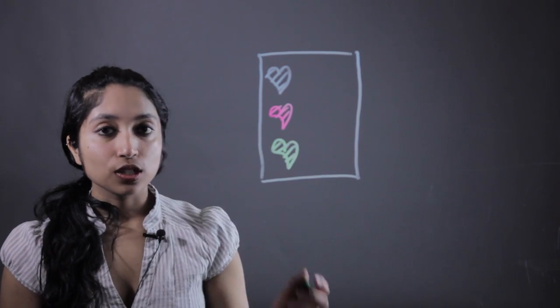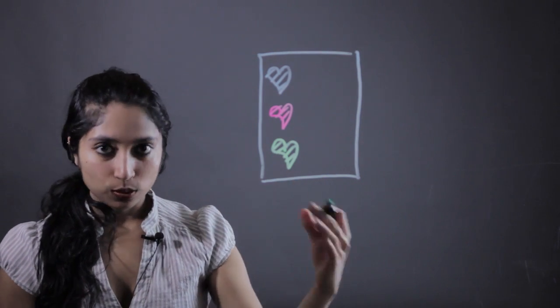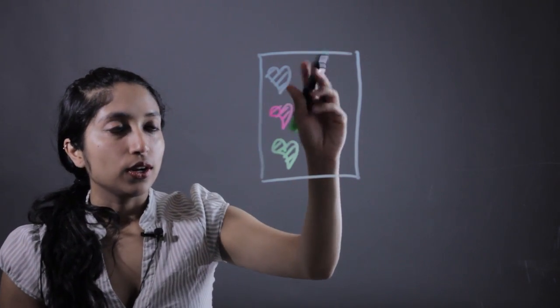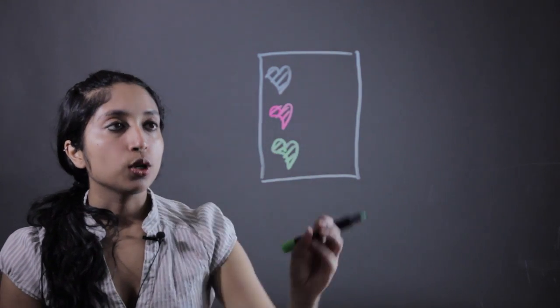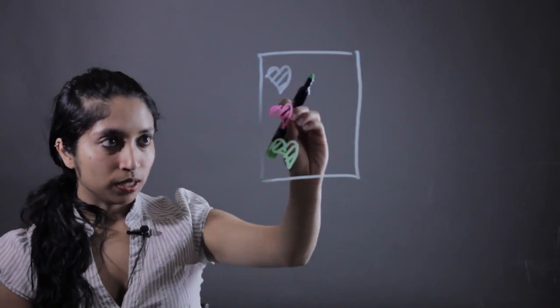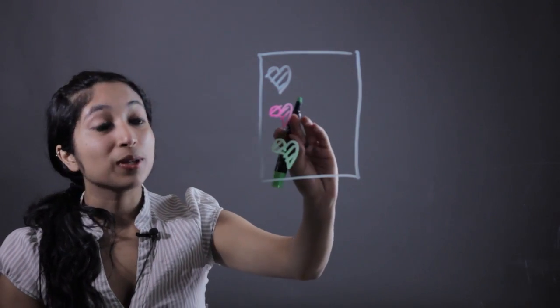What you're going to ask the kids to do is sort, which is one of those important math skills, into each of the different categories. So put all the blue candy hearts in the blue heart, put all the pink ones in the pink, put all the green ones in the green.